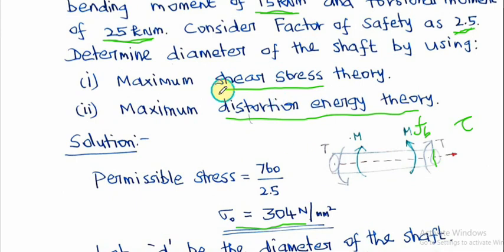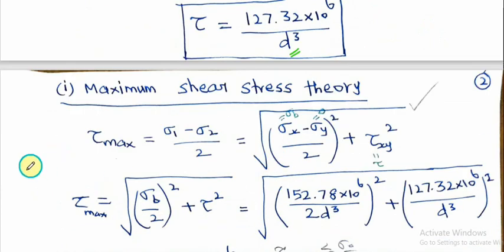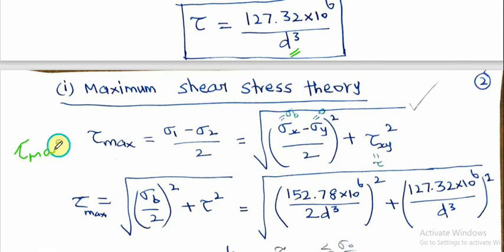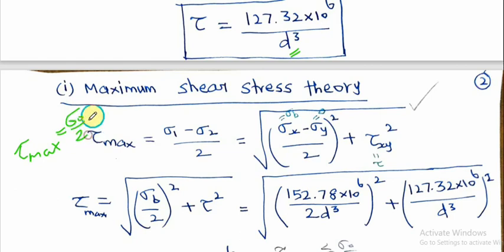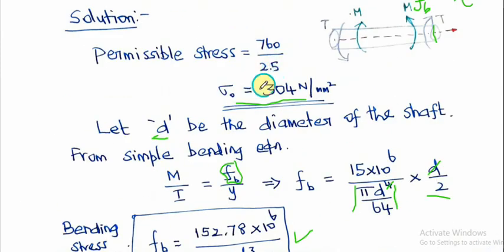The first theory is the maximum shear stress theory. The condition is that τ_max must be less than or equal to σ₀/2, where σ₀ is the permissible stress. The factor of safety is applied to get the permissible stress: σ₀ = 304 MPa.